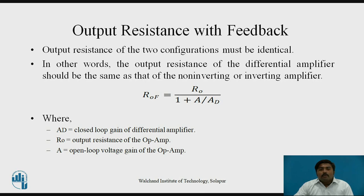The next parameter is output resistance with feedback. The output resistance of the two configurations must be identical; in other words, the output resistance of the differential amplifier should be the same as that of a non-inverting or inverting amplifier. The equation is: Rof equals Ro divided by (1 plus A·Ad), where Ro is the output resistance of the op-amp, Ad is the closed-loop voltage gain of the differential amplifier, and A is the open-loop voltage gain of the op-amp.